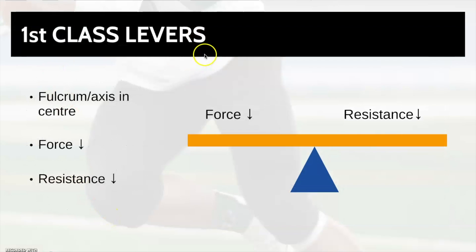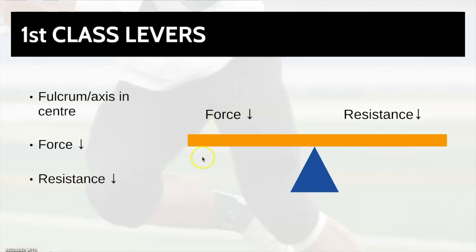Let's start with first class levers. We're going to use this diagram here. The blue triangle represents the fulcrum or the axis — this is where the bar rotates or pivots around. For a first class lever, you've got one side with the force or effort coming down; that could be a push or a pull. And on the other side of the bar, you've got the resistance — the weight or load that you're trying to move.